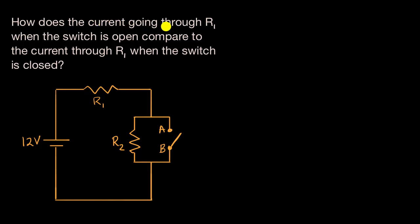We are asked, how does the current going through R1, so this resistor, when the switch is open, this switch, compare to the current through R1 when the switch is closed? Pause this video and see if you can figure that out.